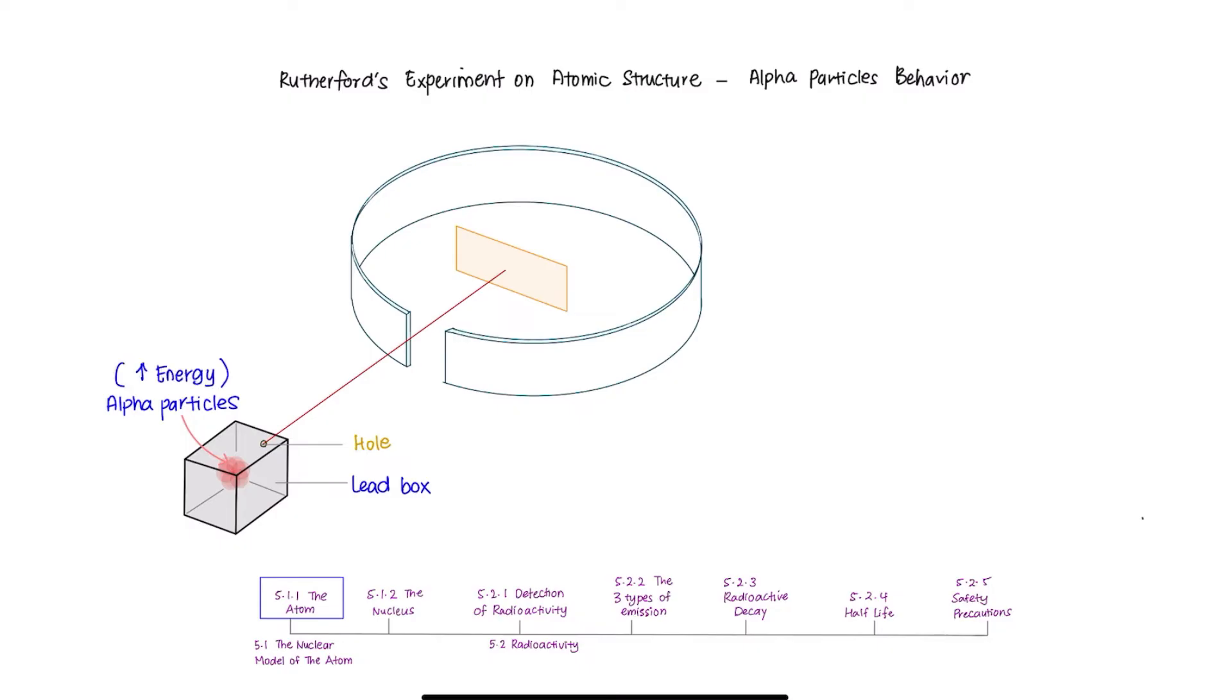It's because it has high energy so the particles can bombard through the gold foil. And the fluorescent screen here is to trace alpha particles that hit them as they will glow.